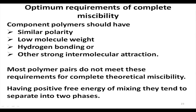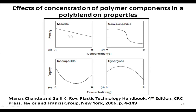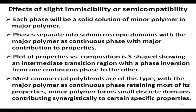Since two component polymers cannot meet the complete theoretical requirement of miscibility, we have to look at their free energy of mixing. If the free energy of mixing is positive, the component polymers will tend to separate into two different phases. Let us proceed toward the semi-compatible part of the curve. In case of slight immiscibility or semi-compatibility, each phase will be a solid solution of the minor polymer in the major polymer.